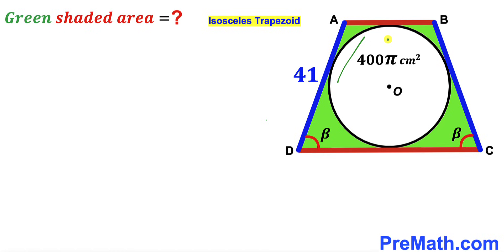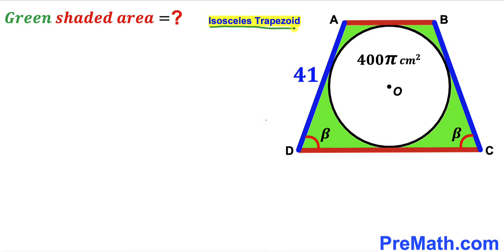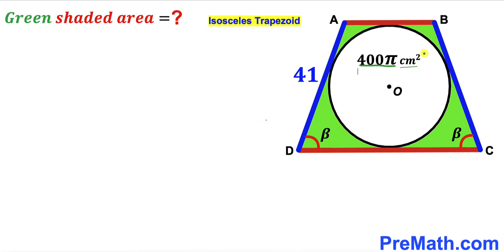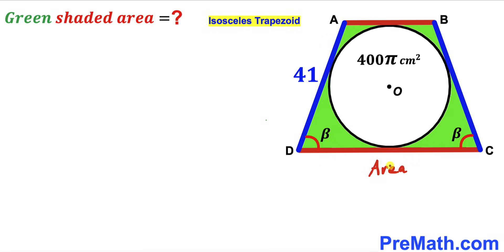Welcome to pre-math. In this video we have a circle with center O fully inscribed in an isosceles trapezoid ABCD. The marked points are points of tangency, the area of the circle is 400π cm², the side AD = 41 cm, and the two base angles are congruent (both equal β). Our task is to calculate the area of the green shaded region.